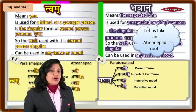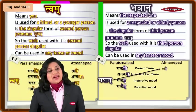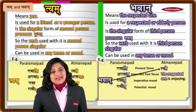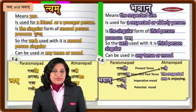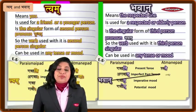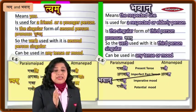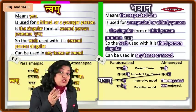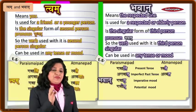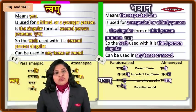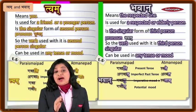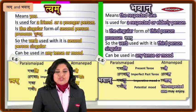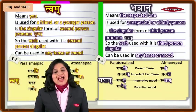'bhavan ramate' means 'the respected one is enjoying.' In past tense: 'bhavan aramate,' meaning 'the respected one enjoyed.' In the imperative mood: 'bhavan ramatam,' meaning 'the respected one may enjoy.'